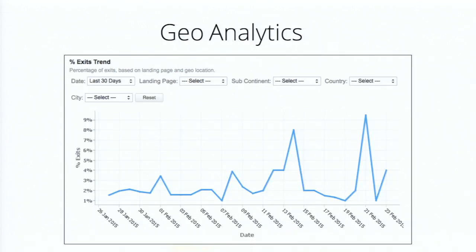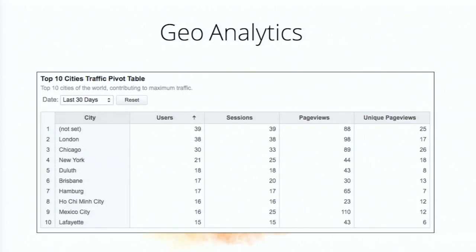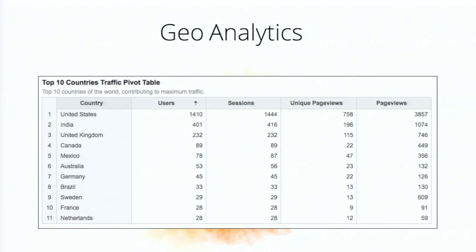Next is geo-analytics, where each of your web pages is analyzed by geolocation. You can drill down to a subcontinent, a country, or a city. Metrics include percentage exit, unique page views, sessions, or number of users coming from a particular city or country. This pivot shows metrics for the top cities that have driven traffic in the last 30 days. Similarly, we have top 10 countries as well.